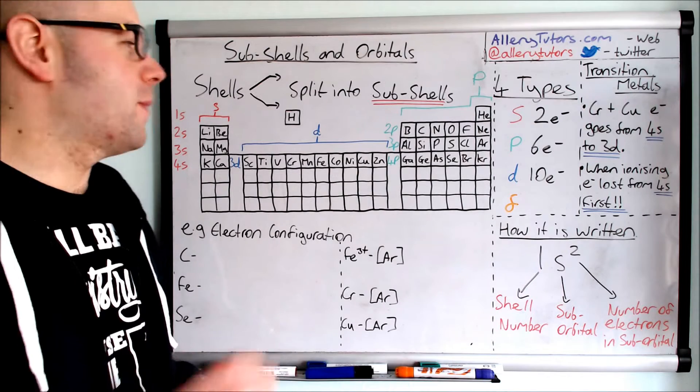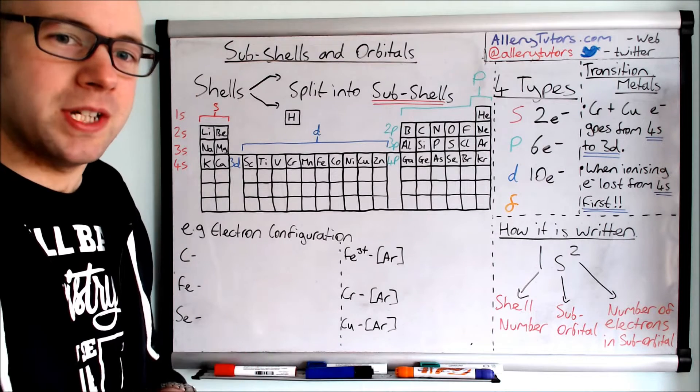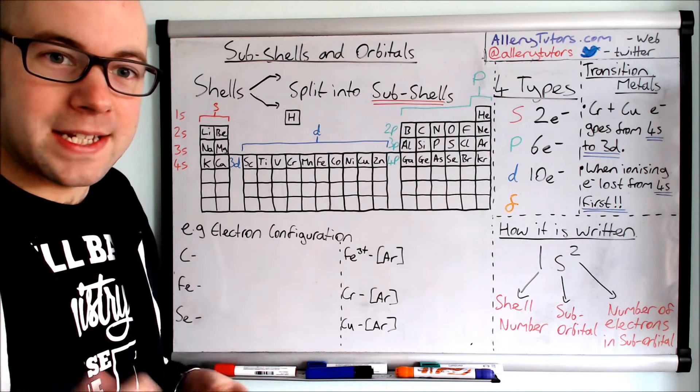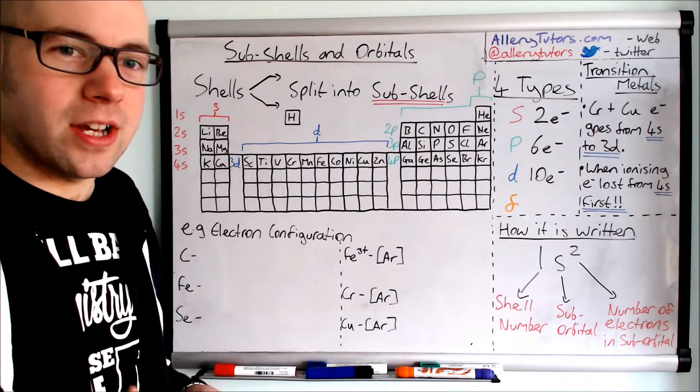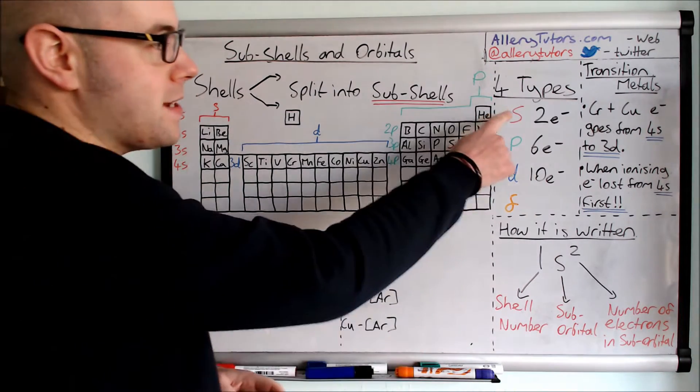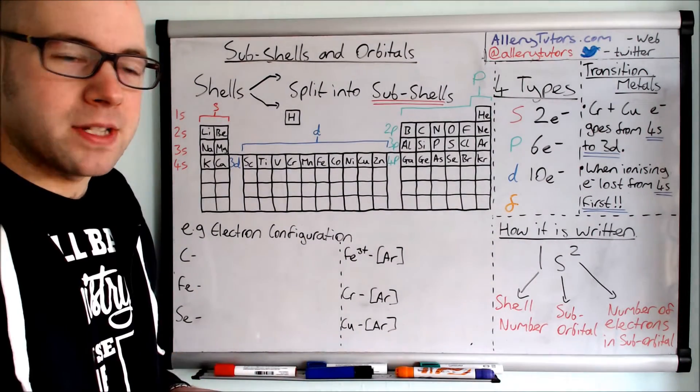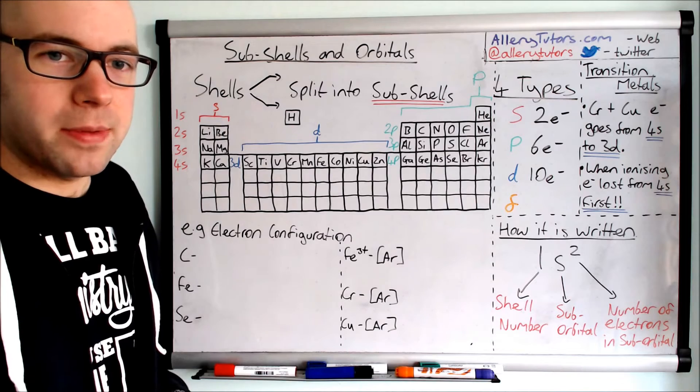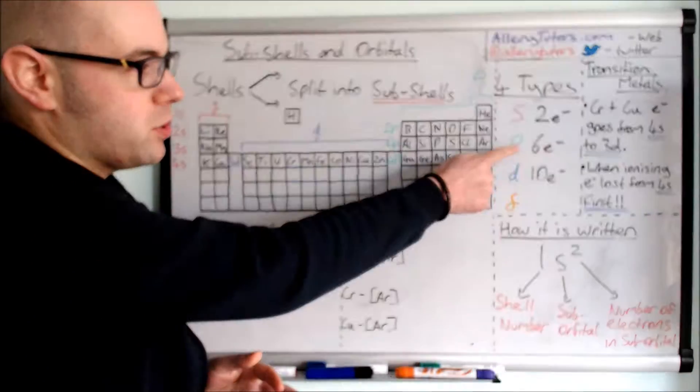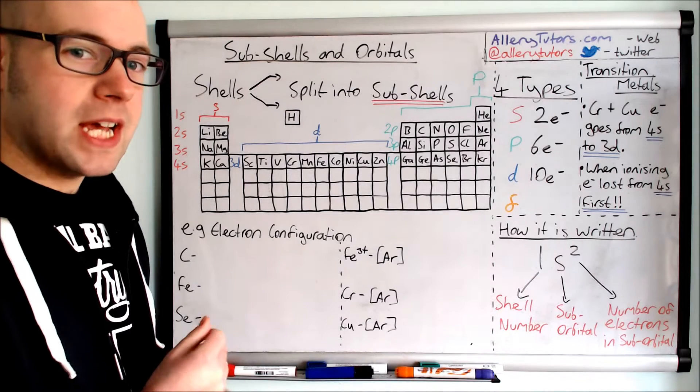So we're going to start with looking at what we mean by a subshell. We know that there is a shell you would have done that from GCSE and the shells can occupy two and eight electrons. We can take these shells and split them into what we call subshells: S, P, D and F. F you don't really need to know a lot about so we're just going to concentrate on the top three. The S orbital can hold two electrons, the P orbital can hold a maximum of six electrons, and the D orbital can hold a maximum of ten electrons.